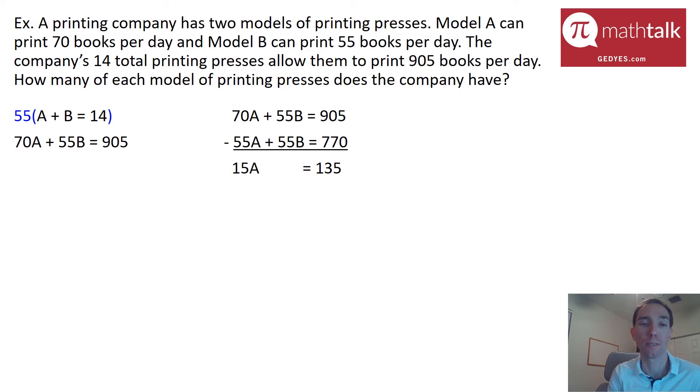One last step. I've got to divide both sides by 15. And when I do that, I have 9 model A's. All right. And again, because they ask for how many of each model, I need to figure out how many model B's there are. And this is the easy part. In my original equation of A plus B is 14, I know what A is, so I'm going to plug it in. 9. So 9 plus B is 14. I'm just going to subtract 9 from both sides. And I get B is 5, which means that of each type, there are 9 model A's and 5 model B's.